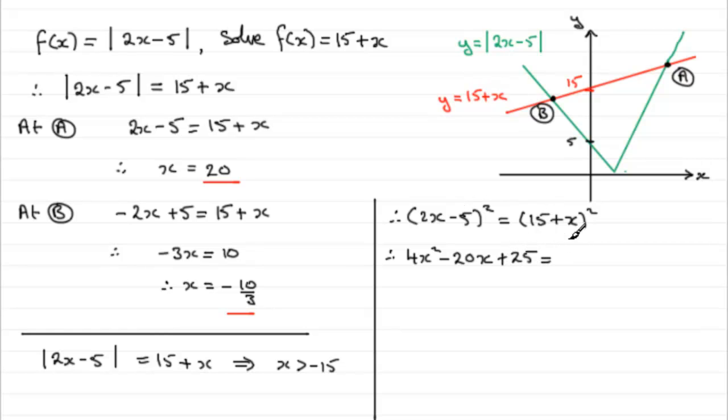And, square the -5. So, that's +25. Do the same over here. 15², 225. Twice the product. The product is 15x. So, double that. That's 30x. And, square the last term. +x² is +x². And, we can rearrange this to make it into our quadratic that equals zero by subtracting x², subtracting 30x, and subtracting 225 from both sides. And, if you do that, you'll end up with 3x² - 50x - 200 = 0.